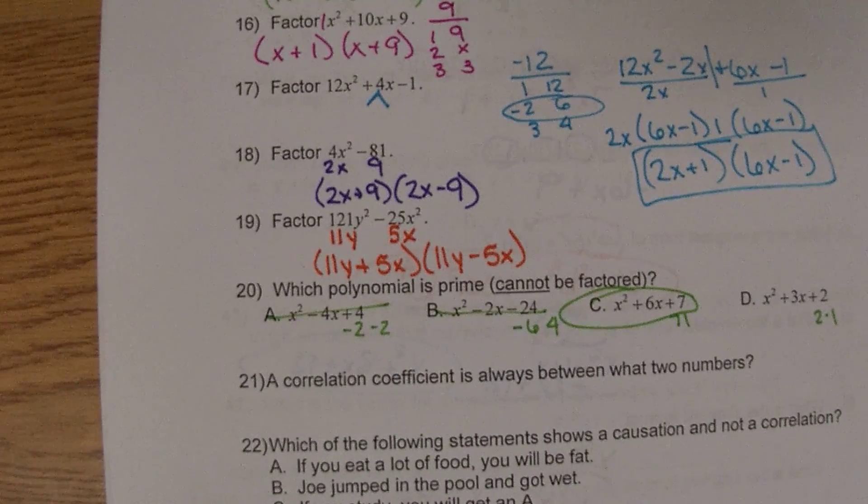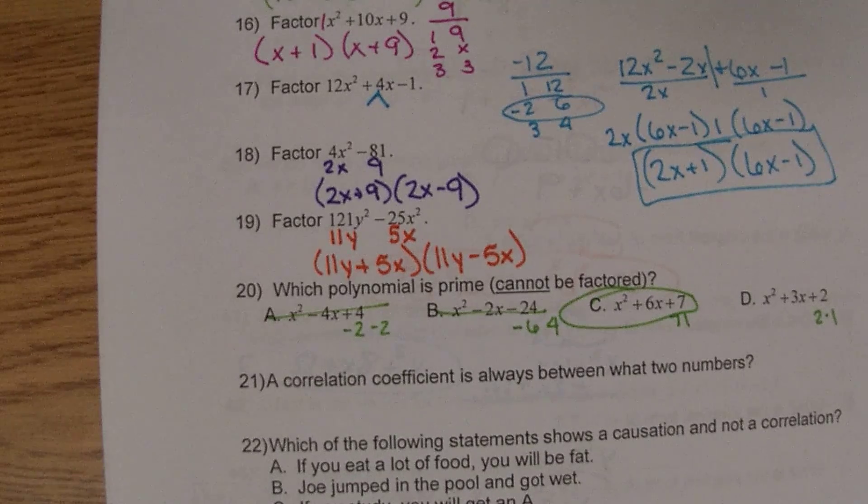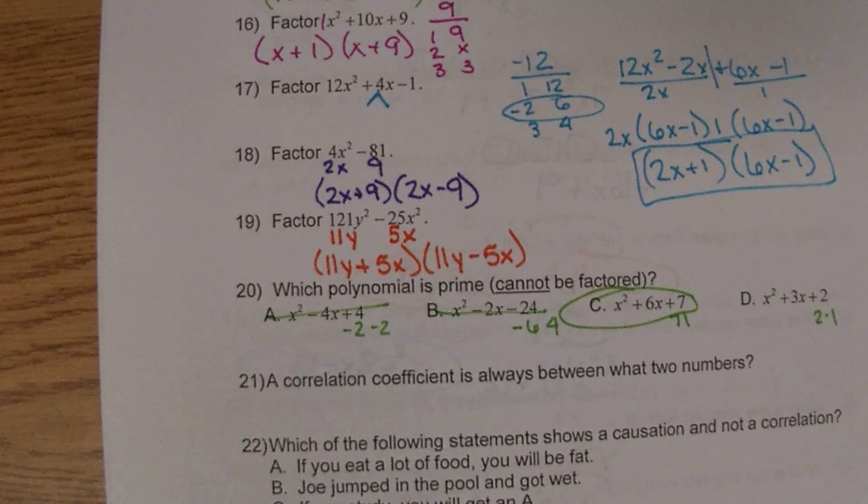Number 21, a correlation coefficient is always between negative 1 and 1.